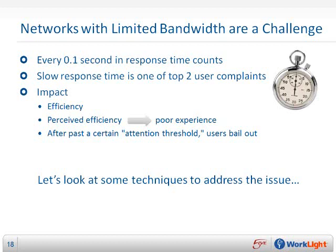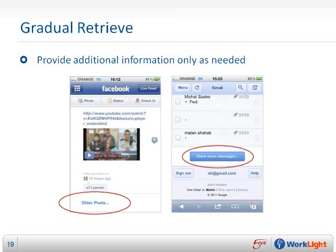Let's look at some techniques to cope with the limited bandwidth challenge. The first technique is gradual retrieve: retrieve additional information only when the user actively indicates interest in further information. In the Facebook app, once launched, only a segment of the news feed is retrieved — the most updated segment. Only if the user actively taps 'older posts' does a new download occur. Similarly, in Gmail, only a segment of the inbox is downloaded; only users interested in older emails choose to load more and wait a bit longer.